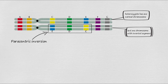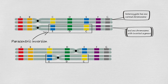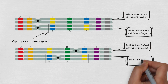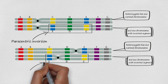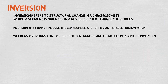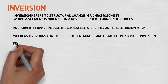If the centromere is included in the segment along with the inversion, that is a different type. In the second diagram, the sequence A B C D E F G is normal, but the segment C D E including the centromere gets inverted to E D C. This type of inversion is called pericentric inversion. So if the centromere is included in the inversion it is called pericentric, and if the centromere is not included it is called paracentric inversion.